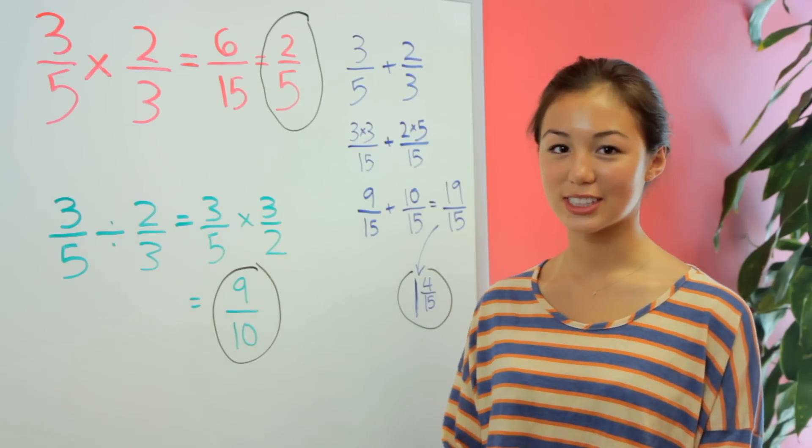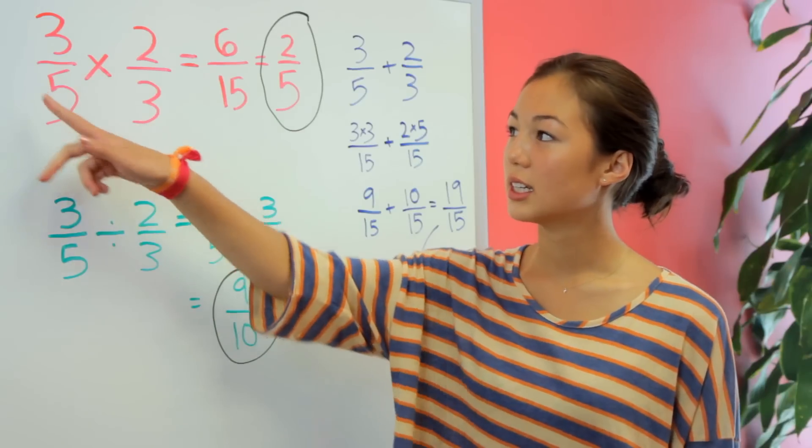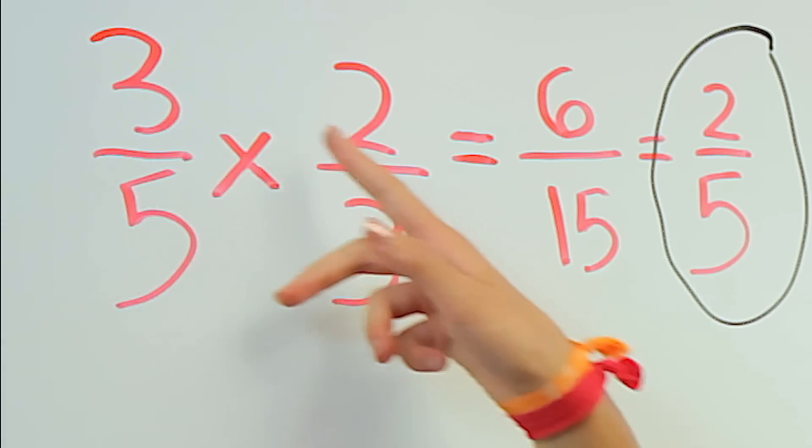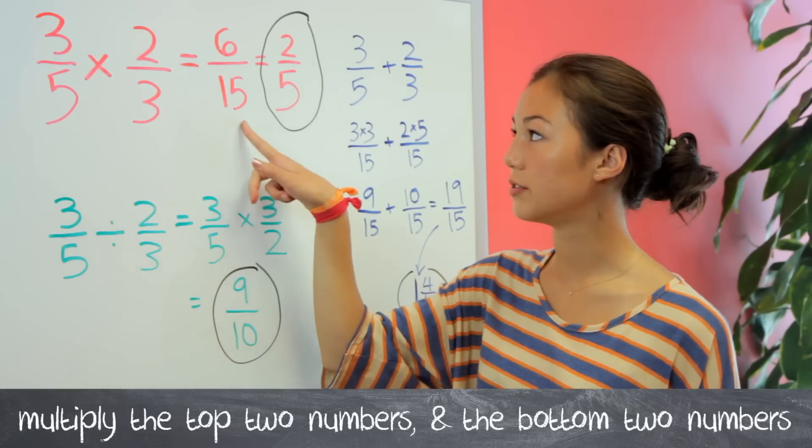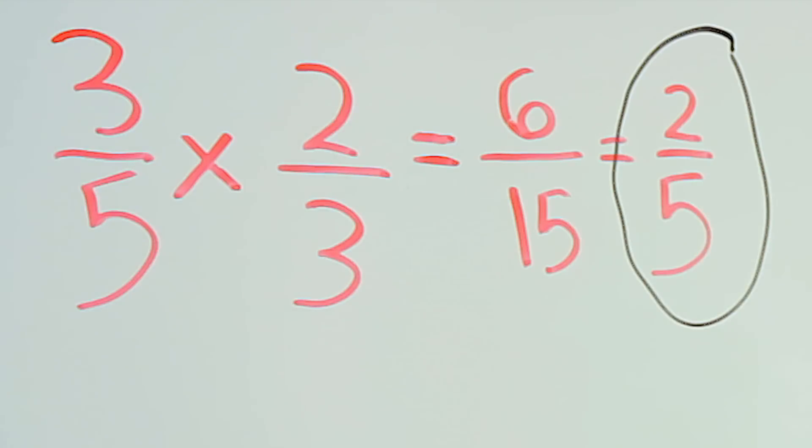So multiplying fractions is actually not too complicated. In this example, you just multiply the top two numbers, 3 and 2, so 6, and multiply the bottom, so 15. And then always simplify because you don't want points taken off, and we get 2 fifths.